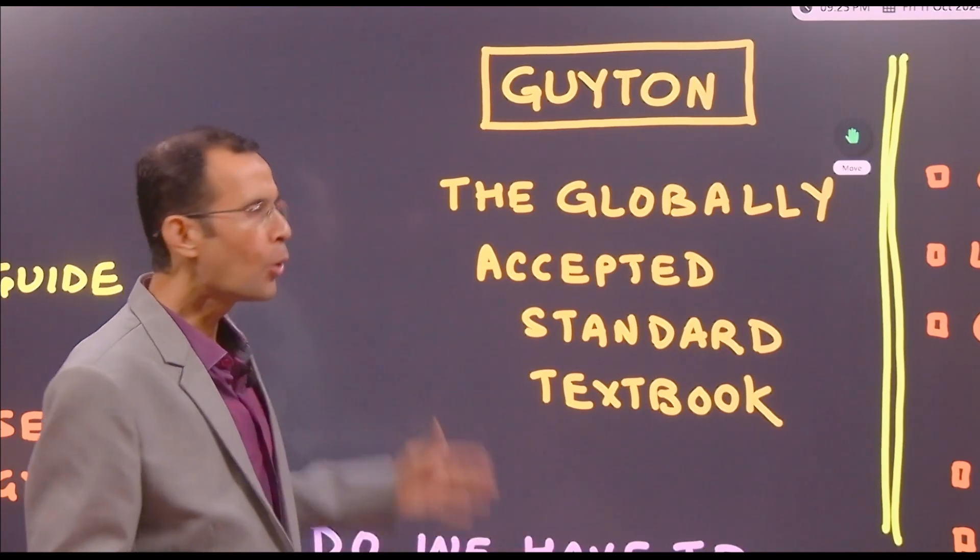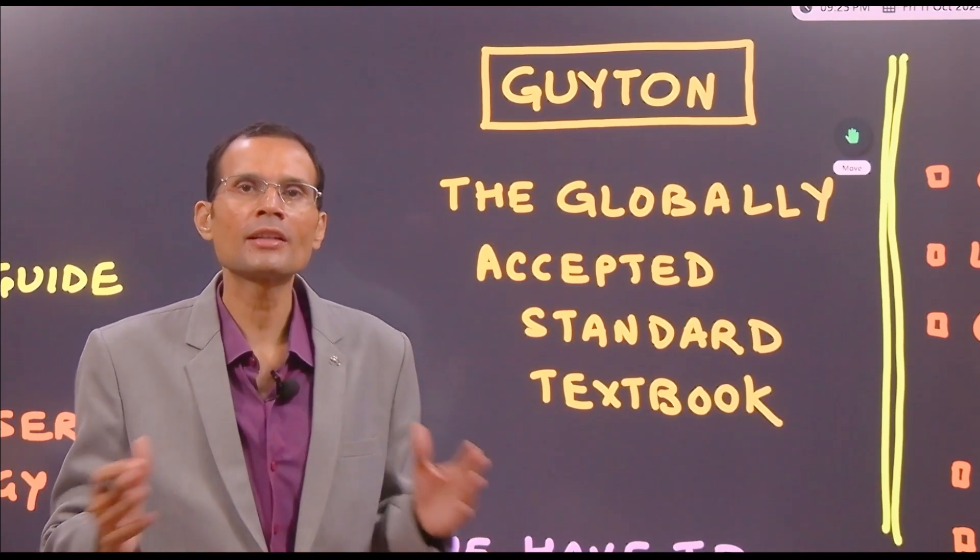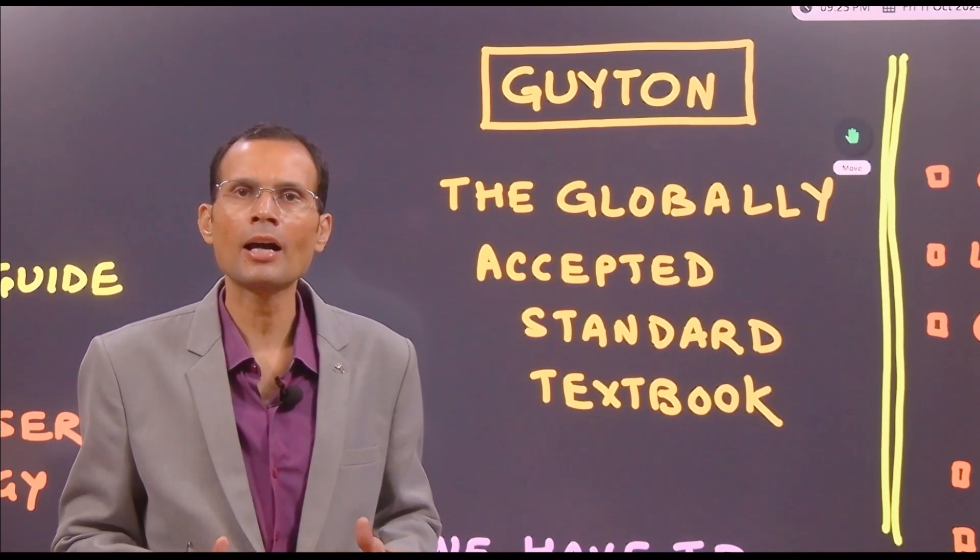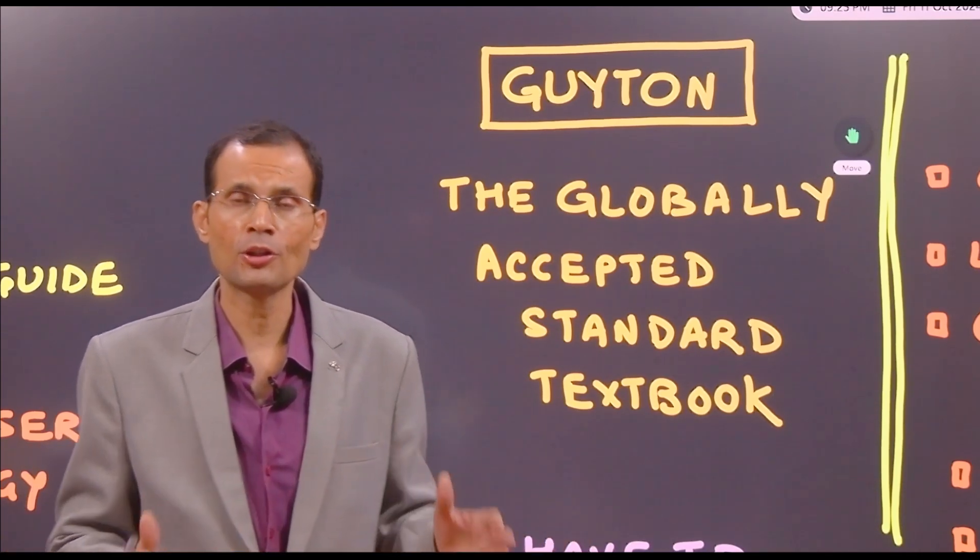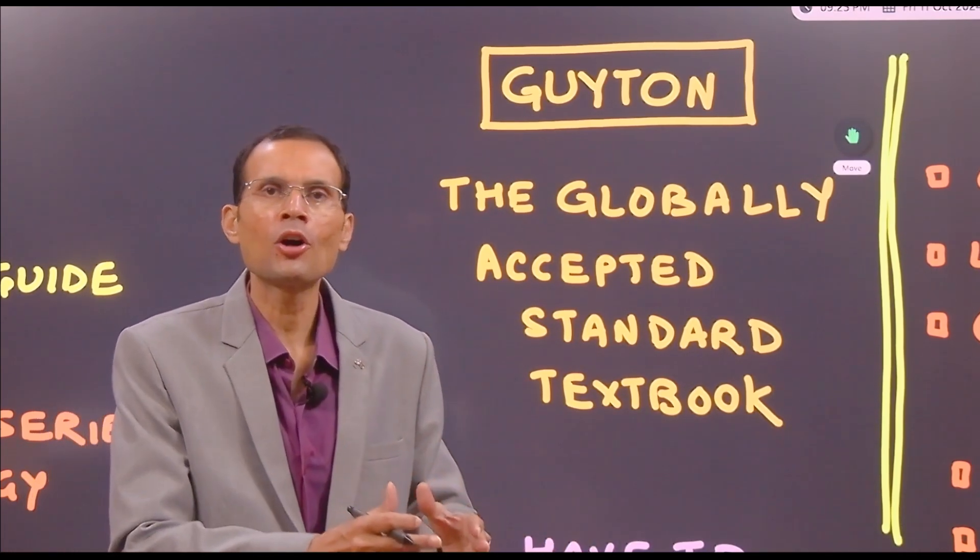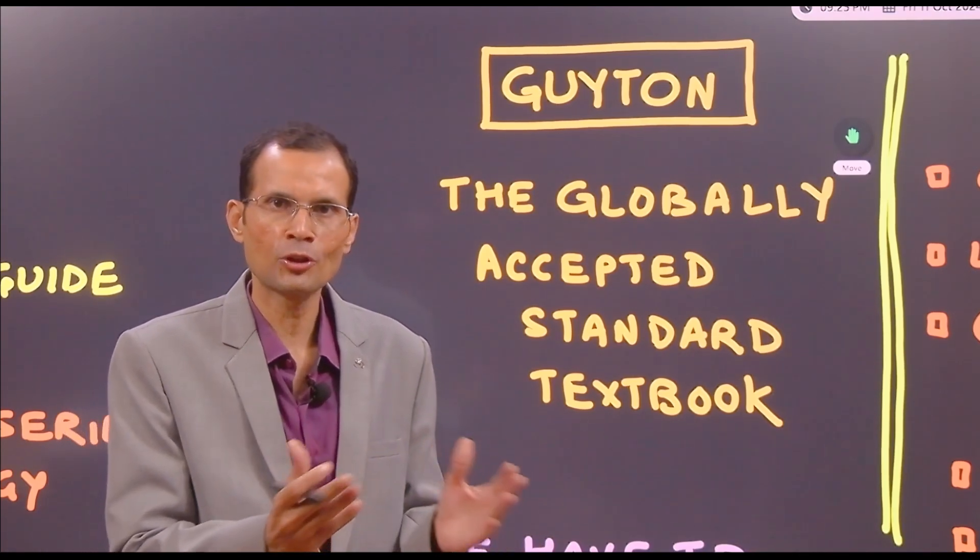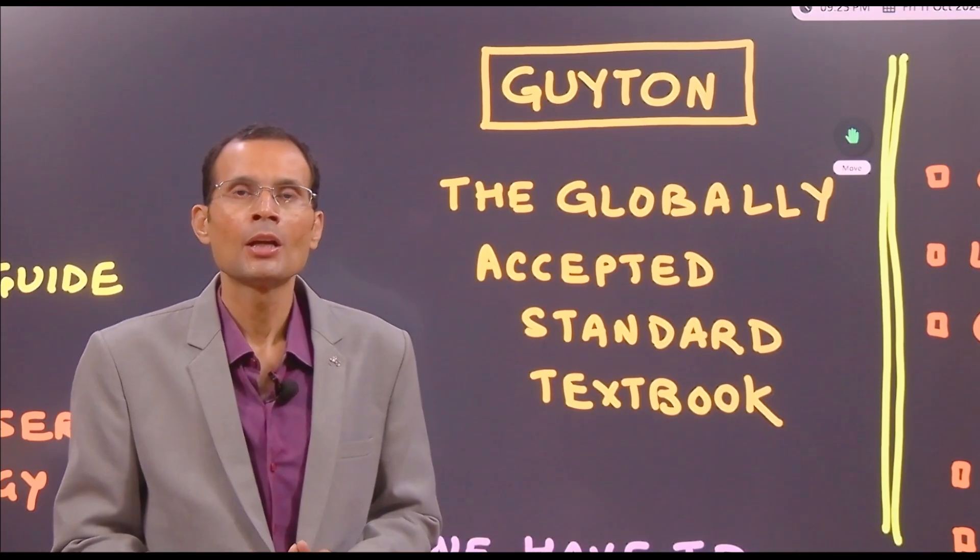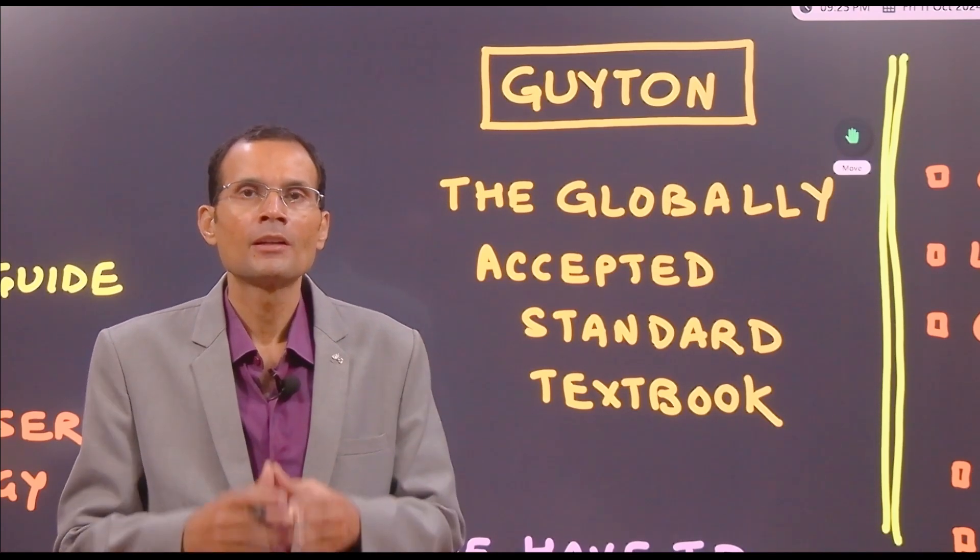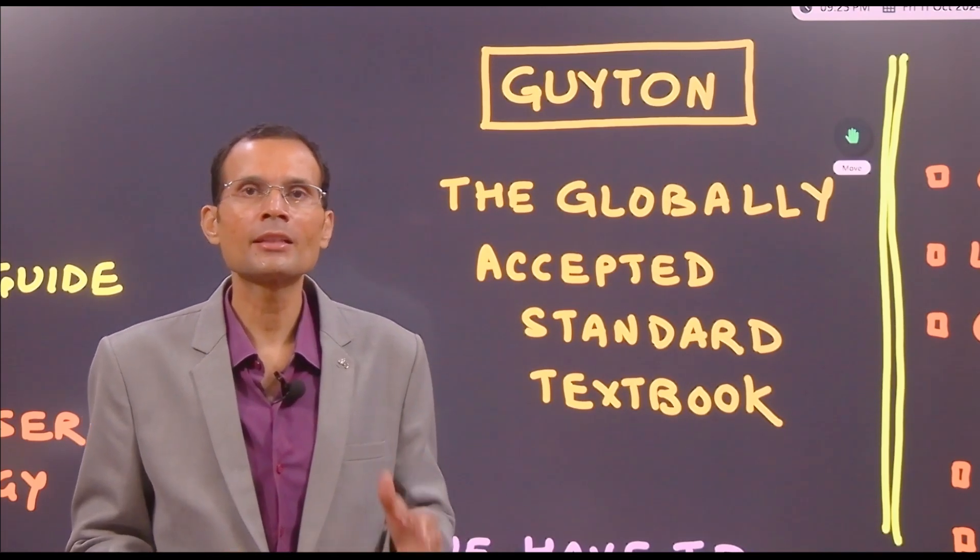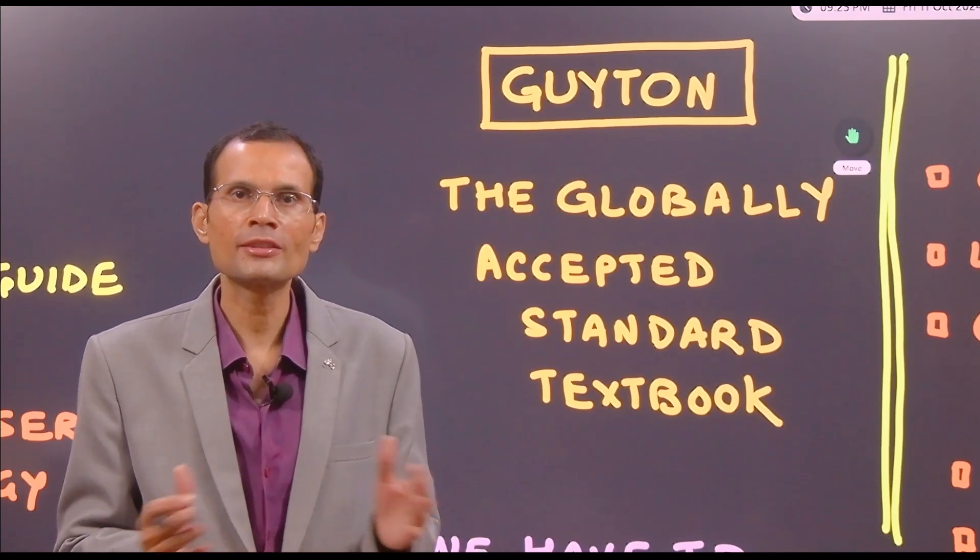You know, the most globally accepted, universally accepted standard textbooks are Guyton and Ganong for physiology. For Ganong, I would say it is a physiology review for somebody who has read physiology once and understood it. But Guyton, yes, Guyton is the most universally accepted standard textbook for first MBBS level.